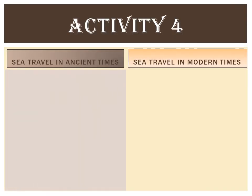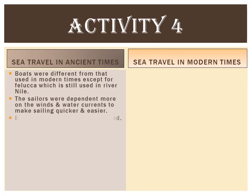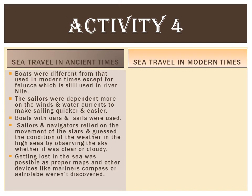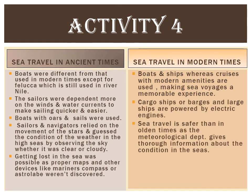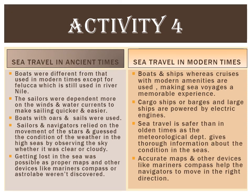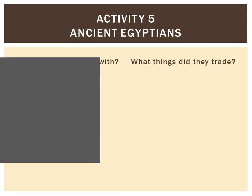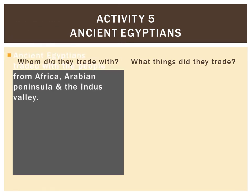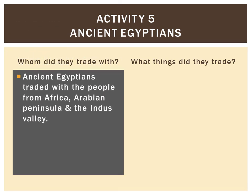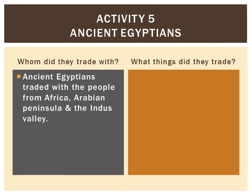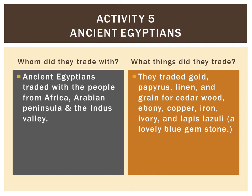Activity 4 asks us to differentiate between sea travel in ancient times and in modern times. You can look at the points I have highlighted — there are about five points for ancient times, and you can also go through sea travel in modern times. Add some more points on your own. Out of the three civilizations, I have chosen the ancient Egyptians: whom did they trade with, and what goods did they trade? You can find these details in your book as well as on the internet.